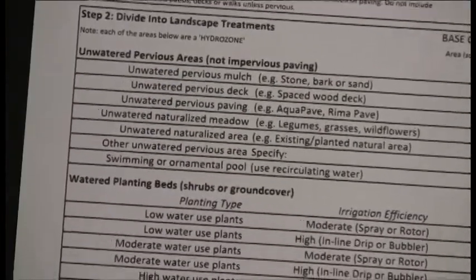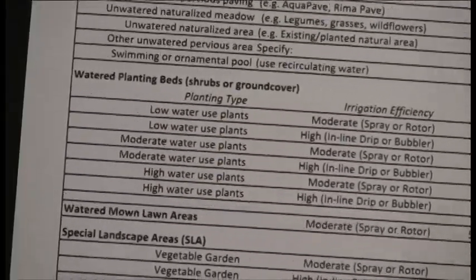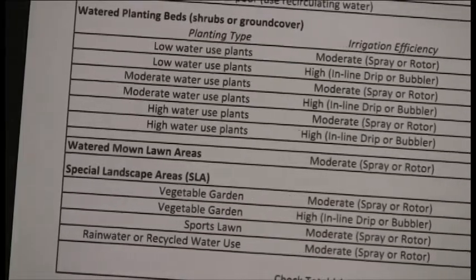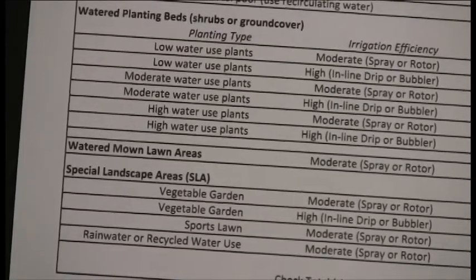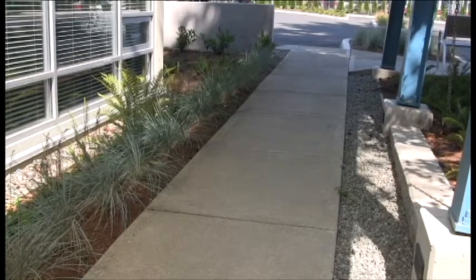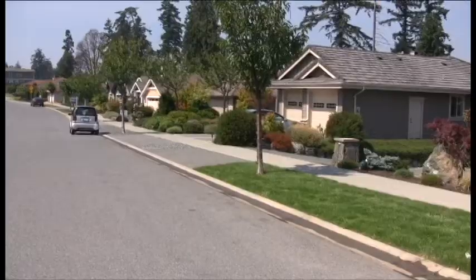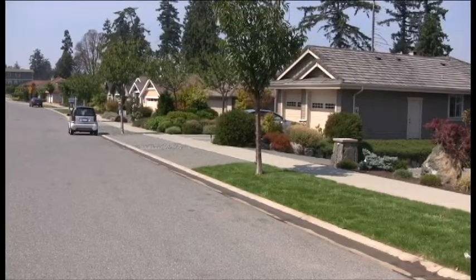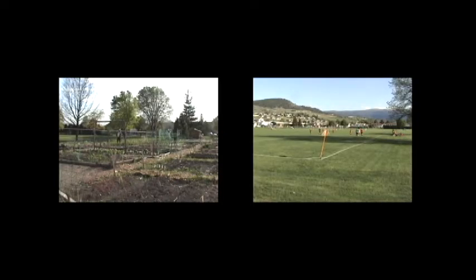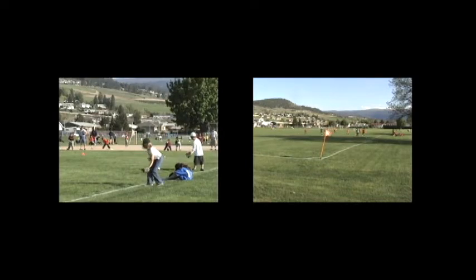As you look down the calculator, you'll see a range of landscape type choices. Each has a greater water need than the one above, including non-watered areas near the top, watered planting beds of various types, and mowing lawn areas which are the highest use. Special landscape areas include vegetable gardens, park sports fields, or lawns around playgrounds — areas that justify higher water use because of their needs.